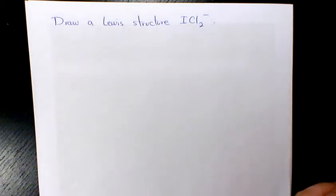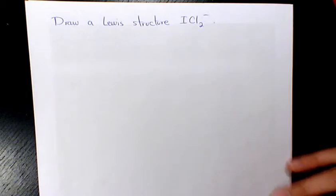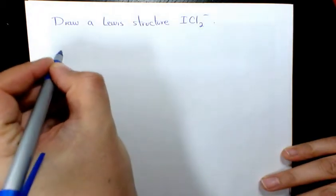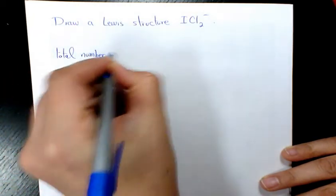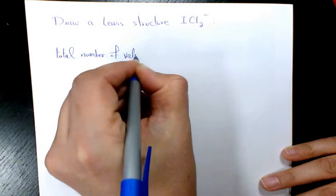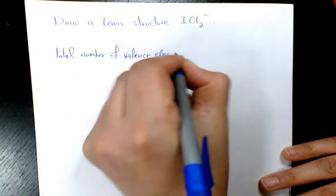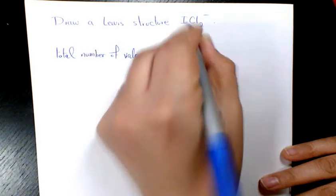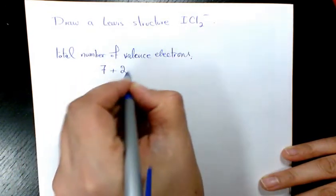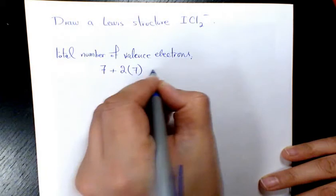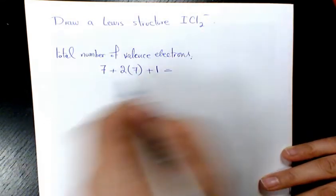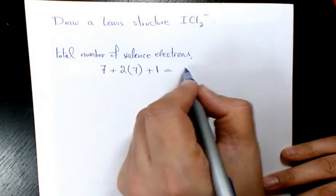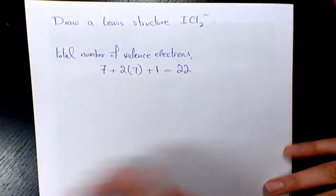What's up guys, this is Massey, welcome to another video. In this video I want to show you how to draw a Lewis structure for ICl₂⁻. First thing, I'm gonna find out the total number of valence electrons. Iodine is 7, we have two chlorines, that's gonna be 2 times 7, and we have a negative charge so we add 1. That's 21 plus 1, giving us 22 valence electrons.